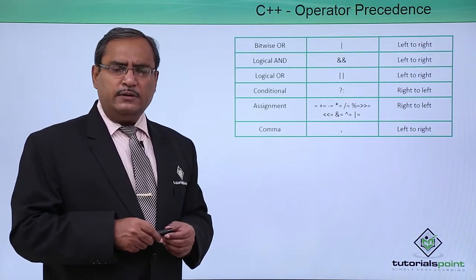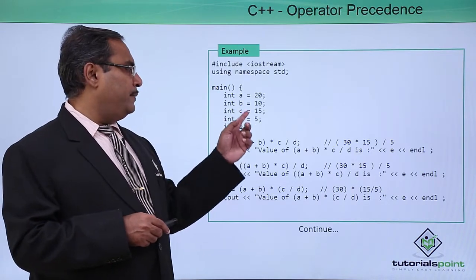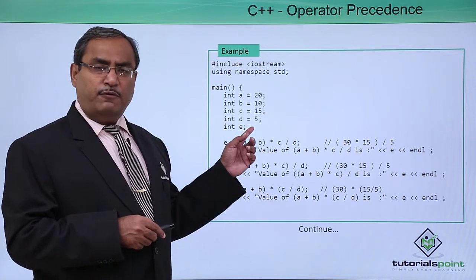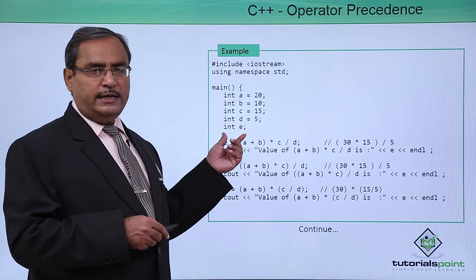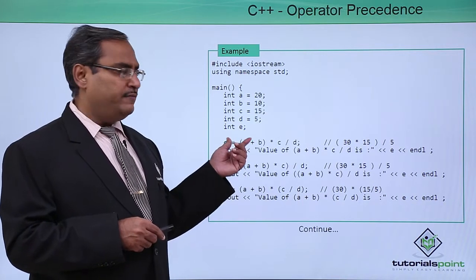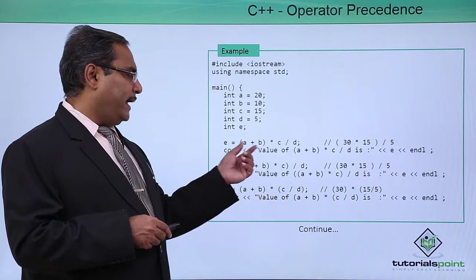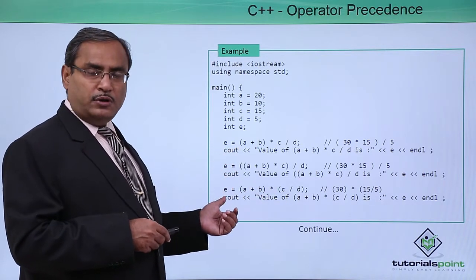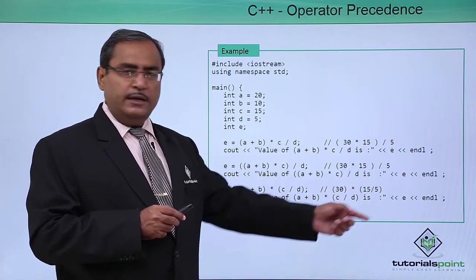I think it will be clear. Let us go for one C++ programming for better understanding. Here we have A, B, C, D, four variables initialized. They are of type integer and I, M, T, E is an uninitialized integer variable. Now I have written so many different expressions and the calculated values are getting assigned to E and we are going to print the value of A as well.